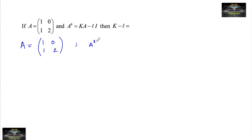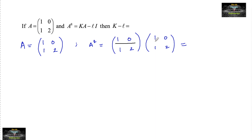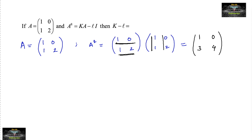A squared is [[1,0],[1,2]] multiplied with [[1,0],[1,2]]. We get: first row with first column — 1×1 + 0×1 = 1; first row with second column — 1×0 + 0×2 = 0; second row with first column — 1×1 + 2×1 = 3; second row with second column — 1×0 + 2×2 = 4. Now we do A to the power of 3.